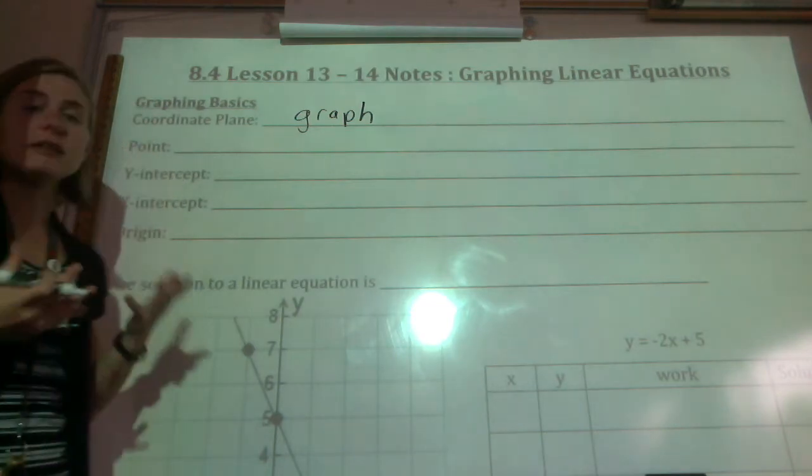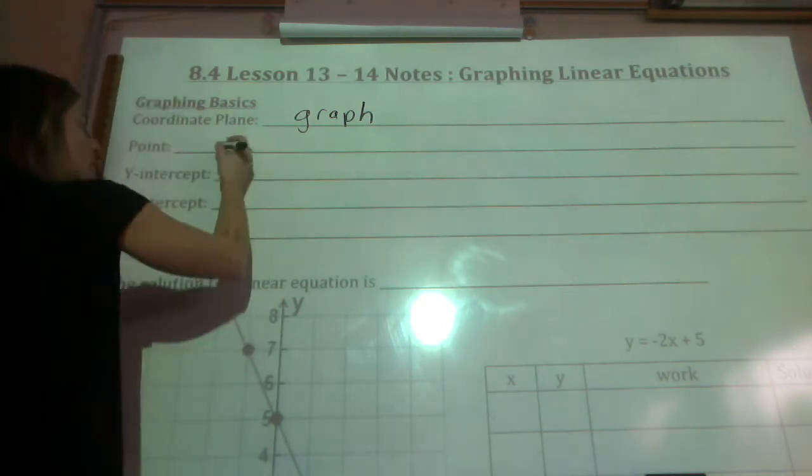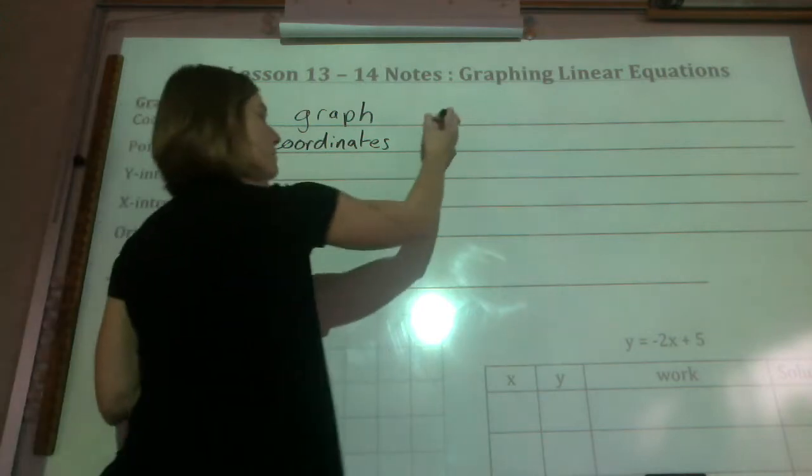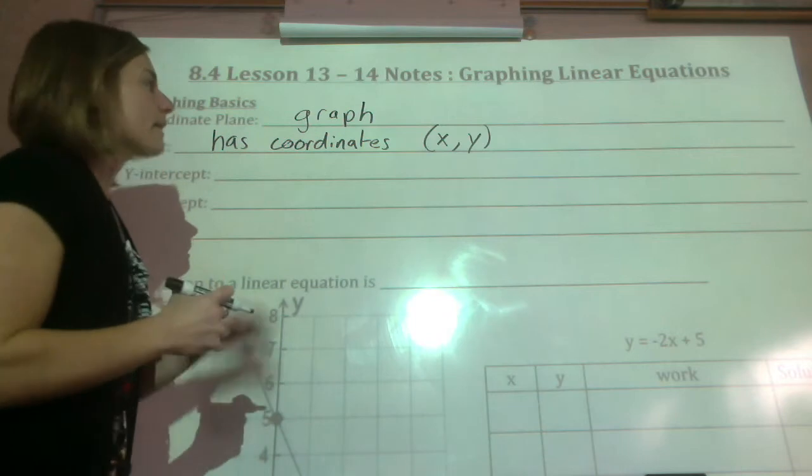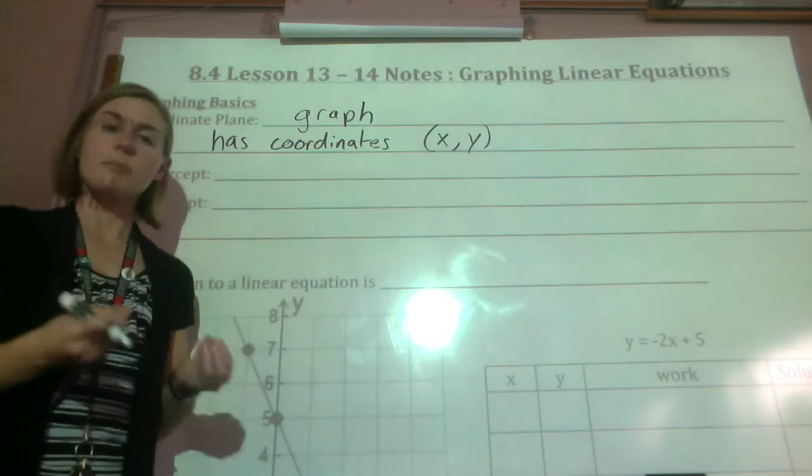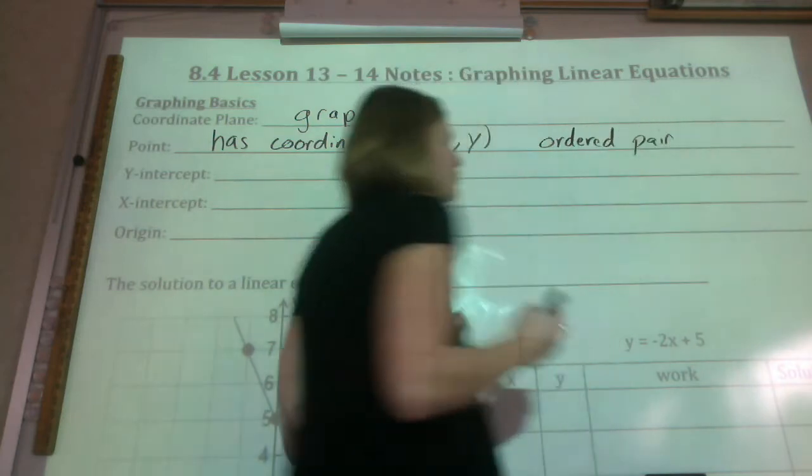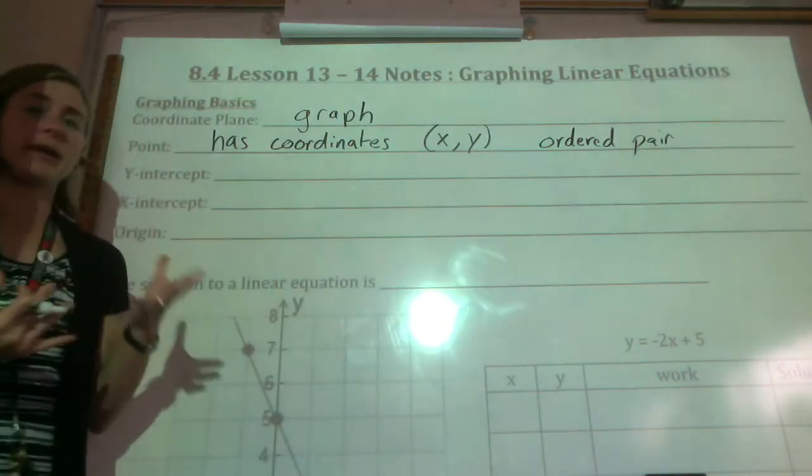A point, obviously you know what a point is, but there's other names for it. So a point obviously has coordinates, and those will be your x and y coordinates. And x always comes first before y, same in the alphabet. And another thing you might hear a point being called is the ordered pair. So if ever you see a reference to an ordered pair, it's just talking about a point on a graph.